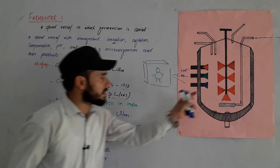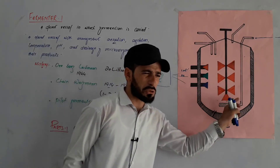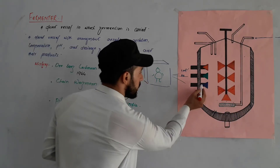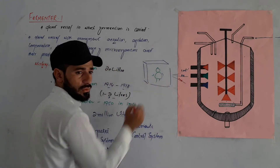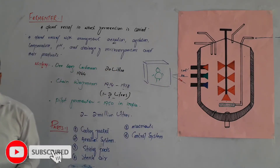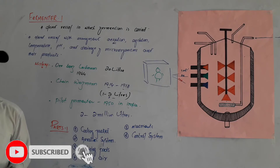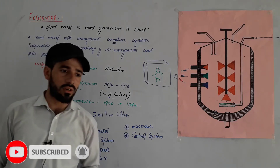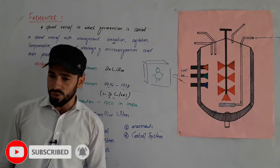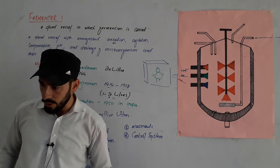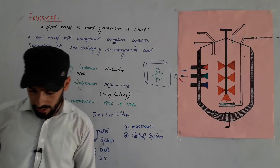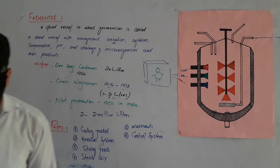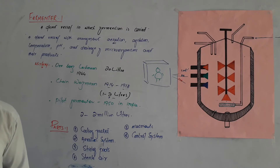The sensors also monitor carbon dioxide concentration — whether CO2 is too high or too low. The control system uses the cooling jacket and other components to regulate conditions inside the fermenter.